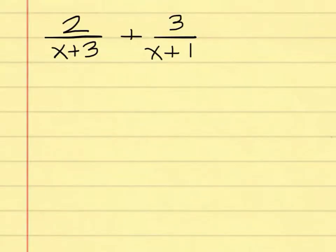The first example is 2 over (x plus 3) plus 3 over (x plus 1). What is the first thing I need to do on this problem? Dietrich — find the common denominator, that is right.